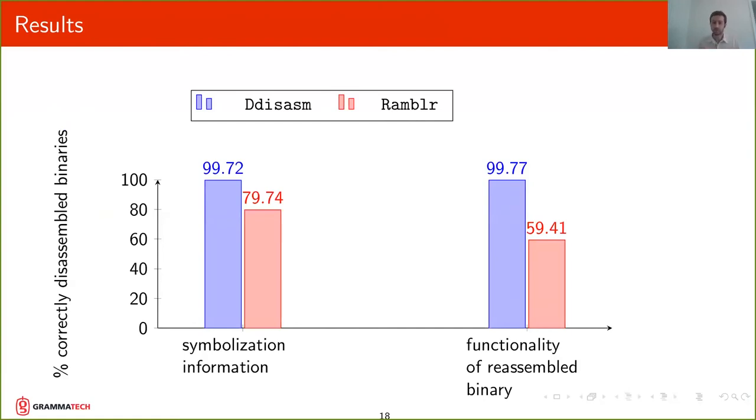The results are the following. We did two experiments. In one, we check if we get the correct symbolization information for a binary. In the second one, we disassemble the binary, reassemble it, and run the test on the reassembled binary and check that the functionality is there. If it passes all the tests, we say the functionality is correct. In both cases, we get a perfect result for over 99.7% of the binaries, and this is well above the results of Rambler.